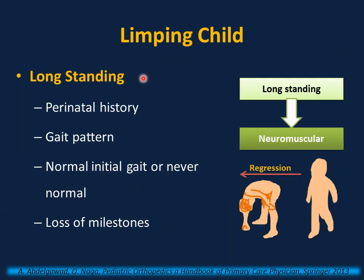If the limping is long-standing, the most likely underlying condition is neuromuscular or rheumatologic. Ask about perinatal history, as in cases of hypoxic ischemic encephalopathy. Gait patterns like scissoring gait or toe walking can be a manifestation of cerebral palsy. Also ask about normal initial gait or loss of milestones — for example, a toddler with Duchenne muscular dystrophy who was initially able to walk but as he grows starts to show weakness and inability to stand normally from a sitting position, using Gower's maneuver.